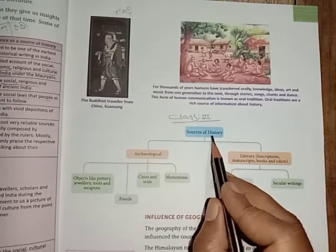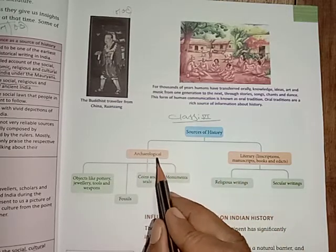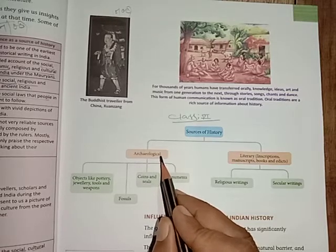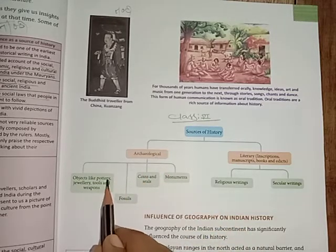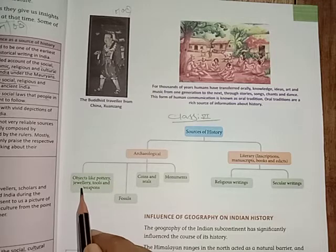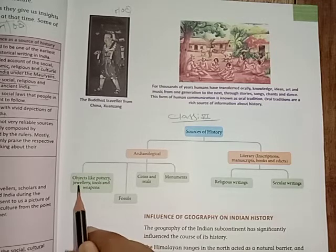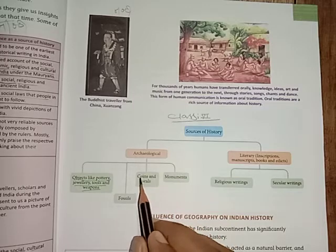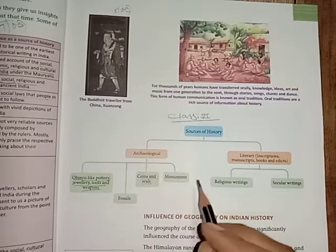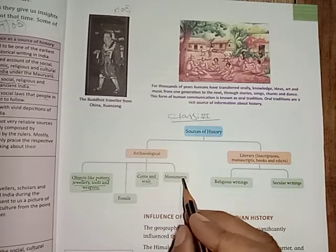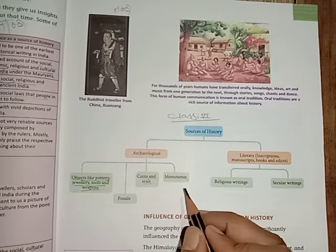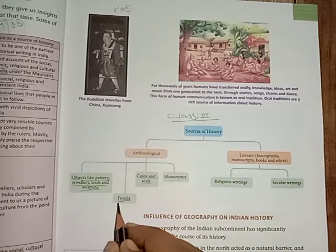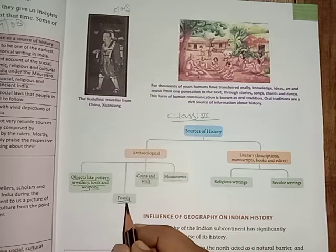The two sources are archaeological sources and literary sources. Archaeological sources include objects like pottery, jewelry, tools and weapons. Coins and seals are also archaeological sources. Monuments and fossils are also archaeological sources.